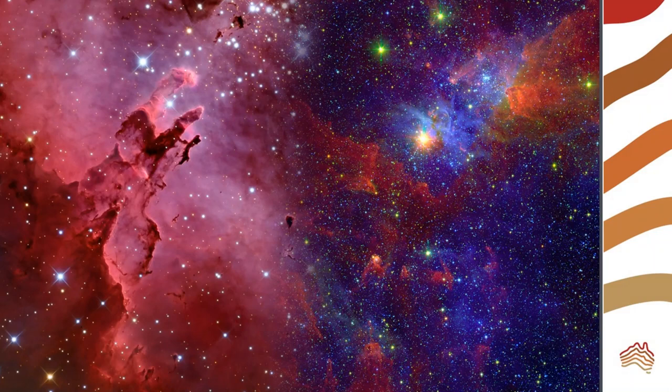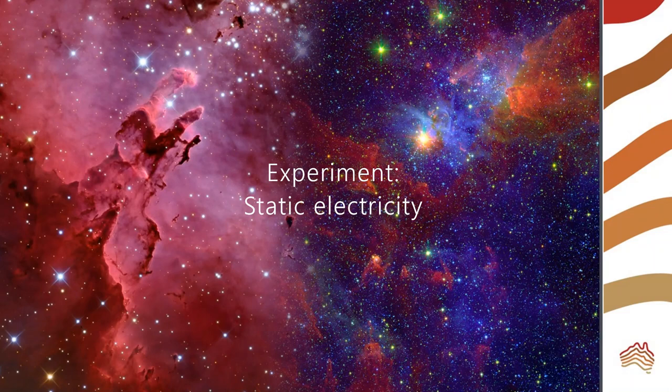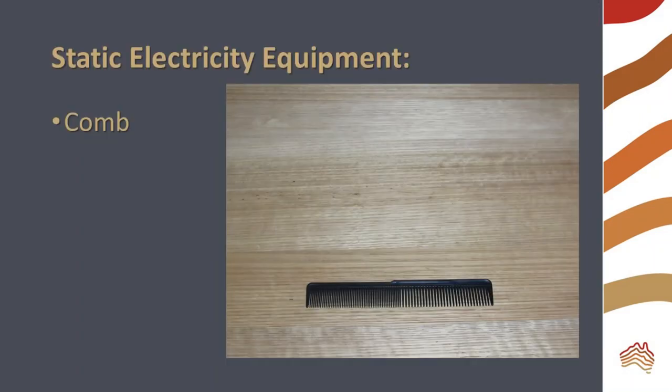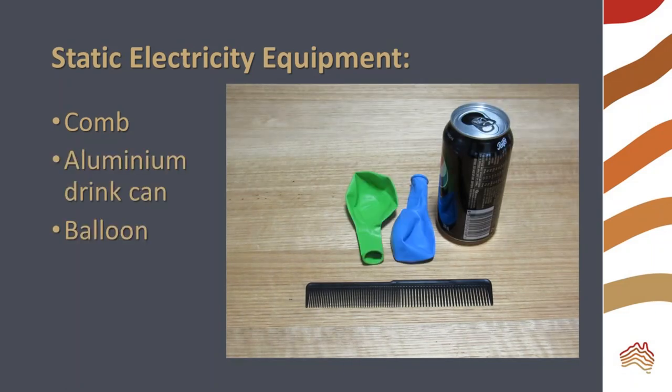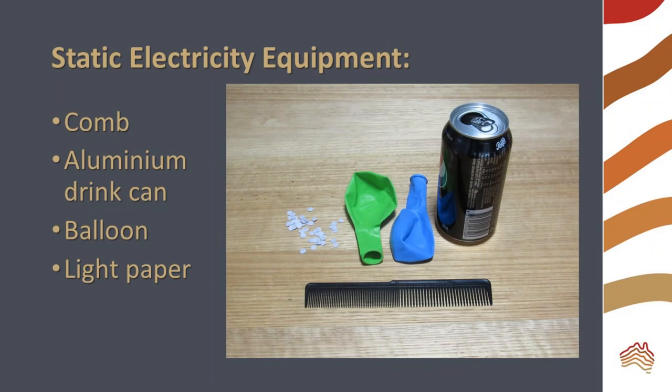We will experiment with electromagnetic forces first by investigating static electricity, the first force that helped matter come together to form the solar system. For this experiment, you will need a comb, an empty aluminum drink can, a balloon, and some lightweight paper. I am using chads from a hole punch used on newspaper, but you could also use a finely shredded tissue.